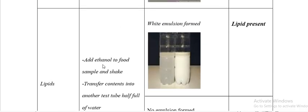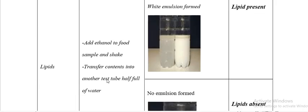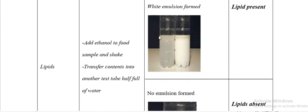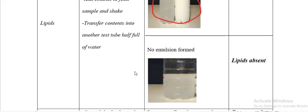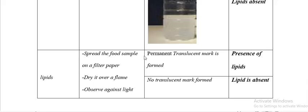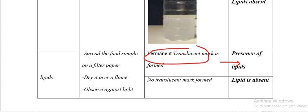For lipids: add ethanol to the food sample and shake, then transfer the contents into another test tube half full of water. A milky-white emulsion means lipids are present. Alternatively, spread the food sample on filter paper, dry it over a flame, and observe — a permanent translucent mark means lipids are present; no permanent translucent mark means lipids are absent.